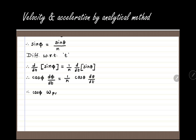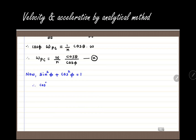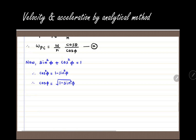Since phi is the angle of inclination of connecting rod PC, d phi by dt represents omega PC. And theta is the crank angle, so d theta by dt is omega, the angular velocity of the crank. Rearranging gives omega PC equals omega upon N times cos theta divided by cos phi, which we call equation A. We also know that cos phi equals square root of 1 minus sin squared phi.